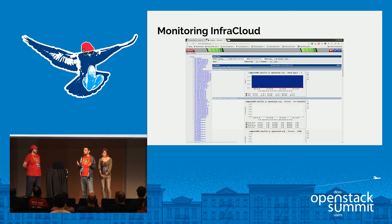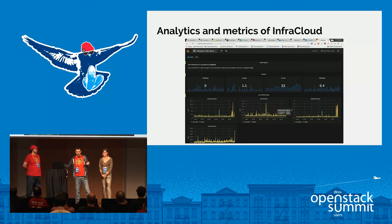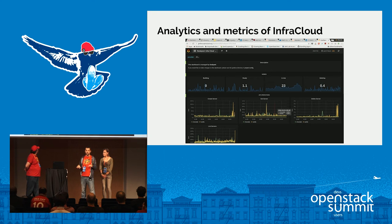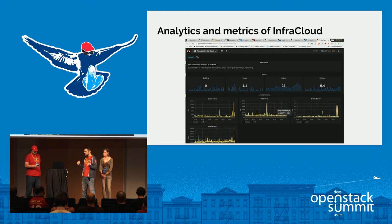We want to monitor our clouds, and we use Cacti for basic monitoring — things like network interfaces, swap usage, disk space, and so on. We also have analytics and metrics. If you go to graphana.openstack.org you'll see lots of dashboards, including dashboards specific to NodePool for each provider. For InfraCloud we have metrics for how long it takes to create a server, delete a server, and listing operations.